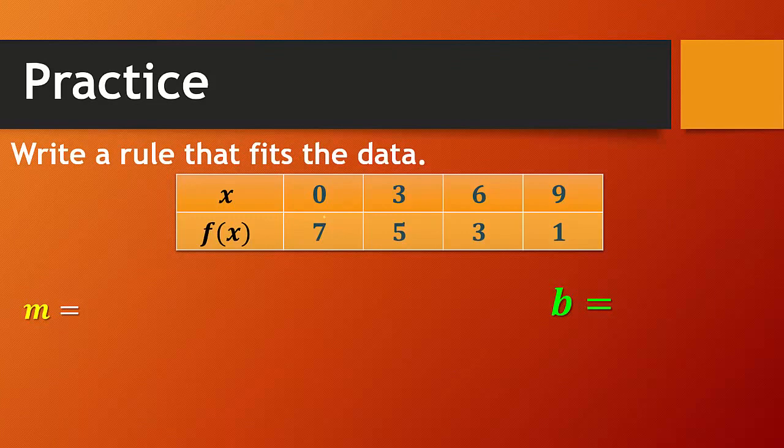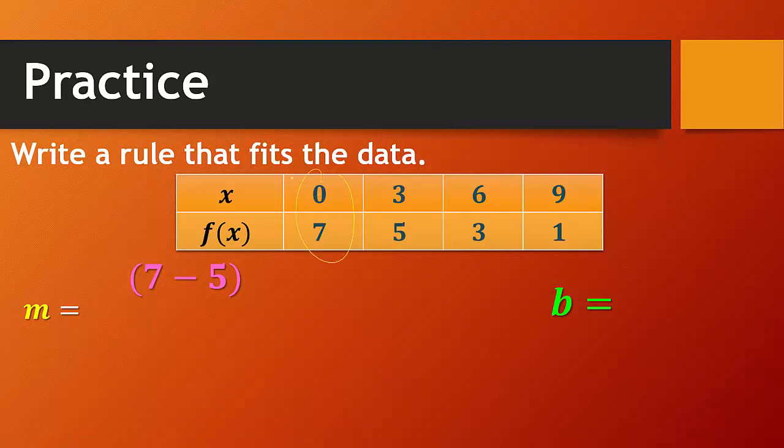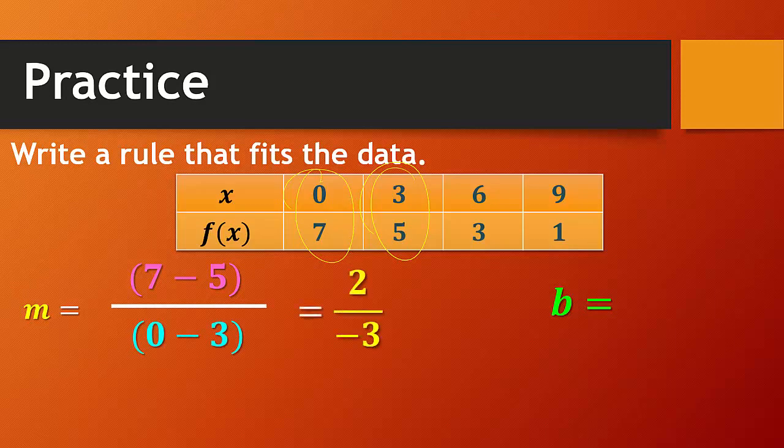Okay, so if we have to write a rule that fits the data based on this table, again, start with finding where x equals 0, which is right here. And that's going to be our b. We'll get back to that in a second. We're going to find our rate of change. I'm going to use these two points and these two points. So I just did 7 minus 5 on top, which means on the bottom, I have to do 0 minus 3.